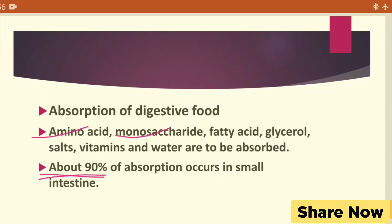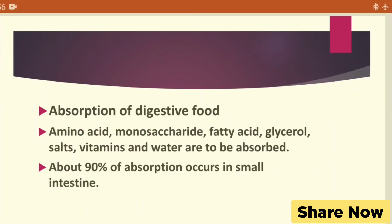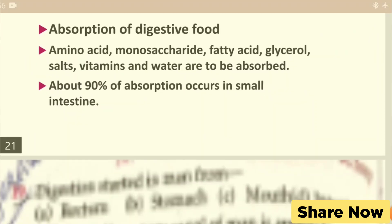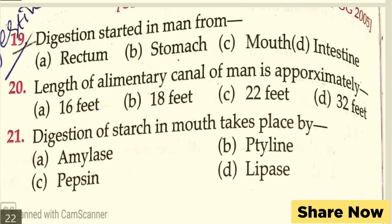The essential nutrients absorbed by the small intestine include: amino acids, monosaccharides, fatty acids, glycerol, vitamins, and water. These are absorbed into the blood. About 10% of absorption occurs in the large intestine.